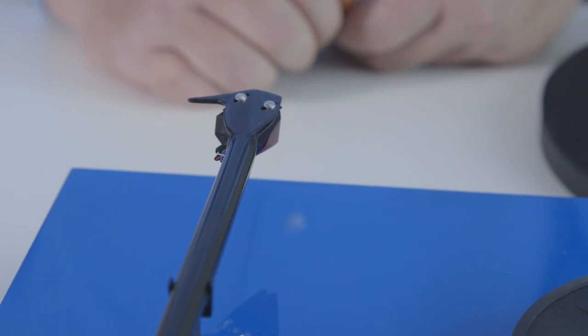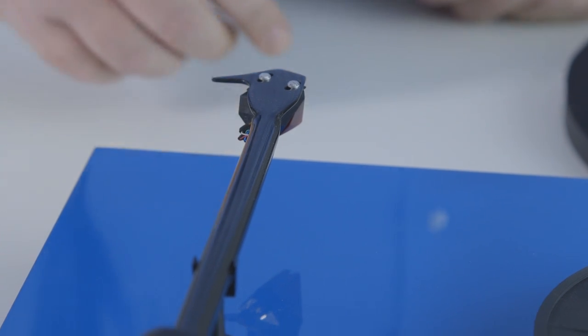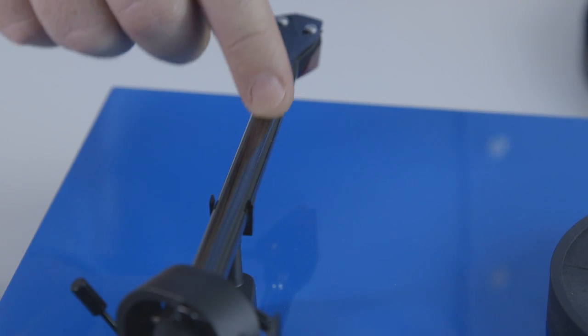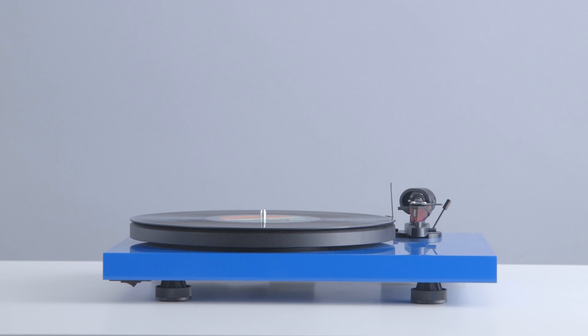Another important factor in a good quality tonearm is the material the tonearm tube is made of. Project uses carbon fiber as a tonearm material in many of their turntables. Even entry level models like this Debut Carbon. This is very unique, unheard of actually at the price point of this turntable.